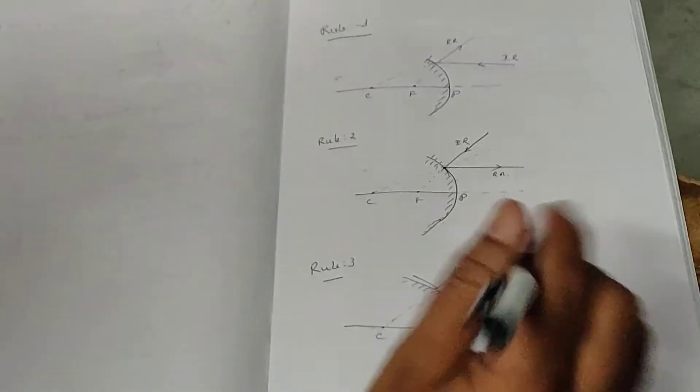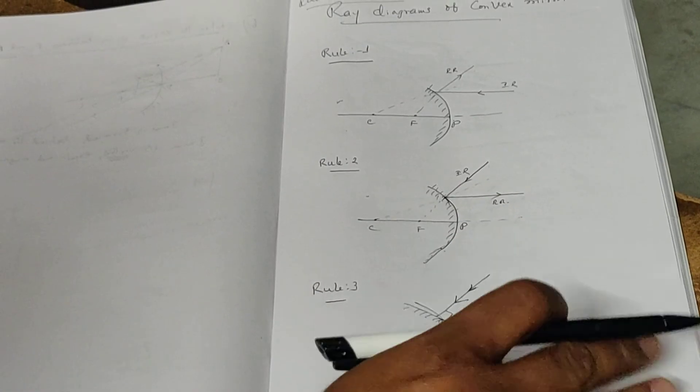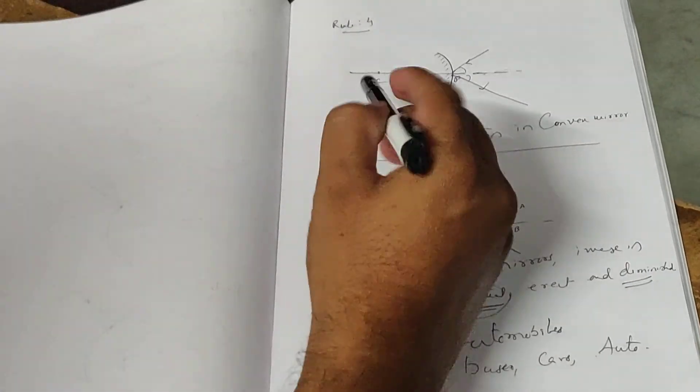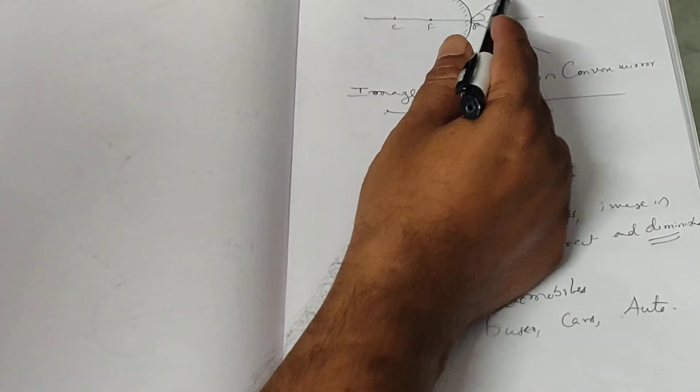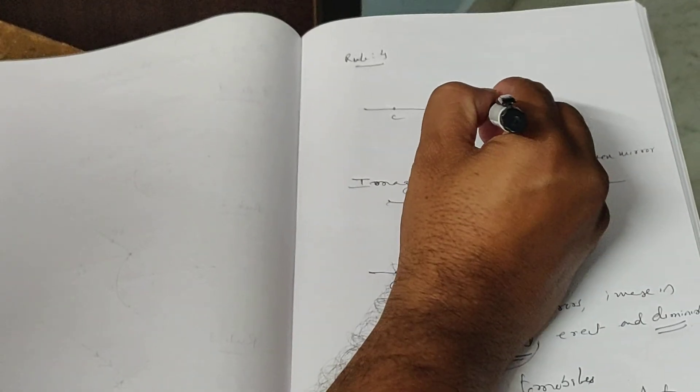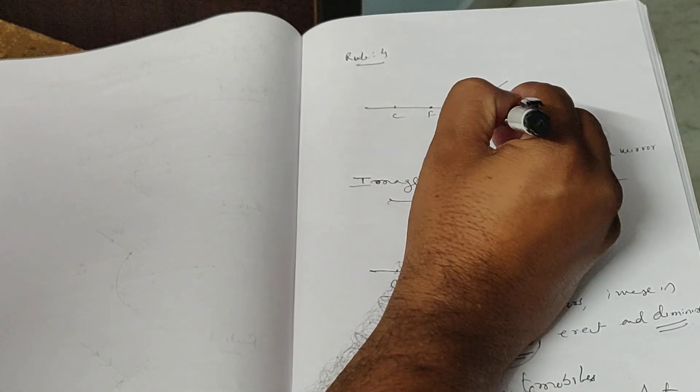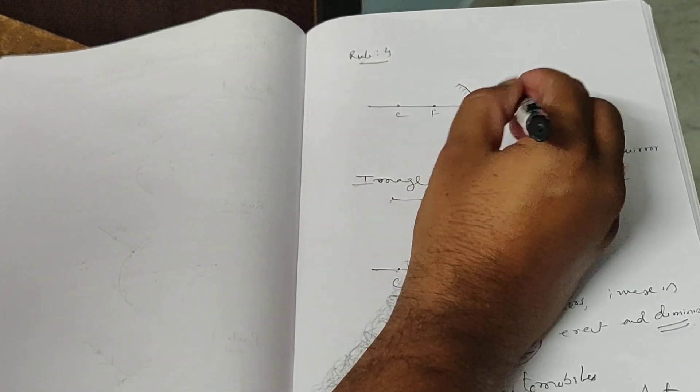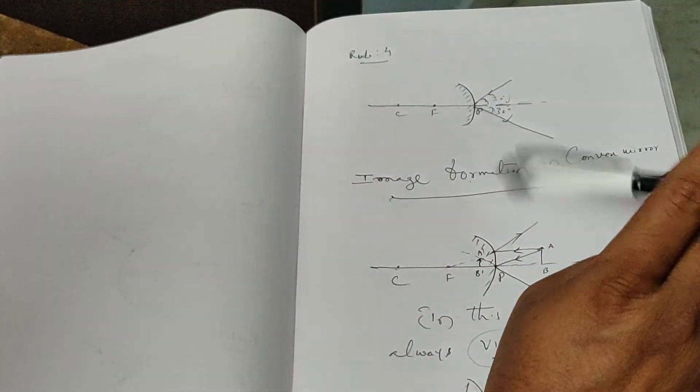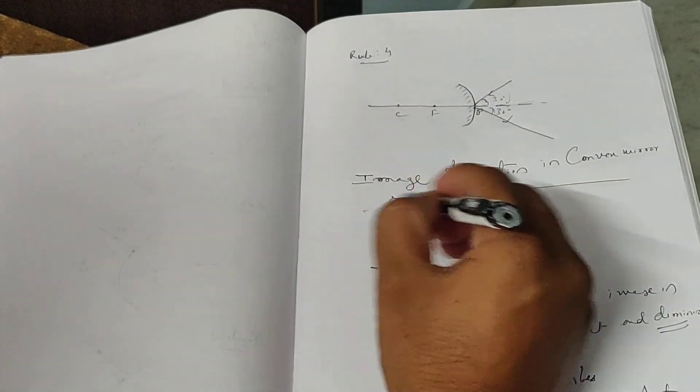That's the normal incidence rule. Rule four follows the law of reflection: whatever angle it makes, if 30 degrees, then here also 30 degrees, and if 40 degrees, then here also 40 degrees.